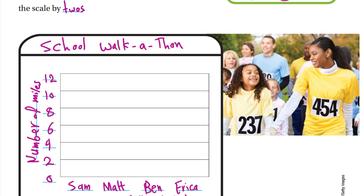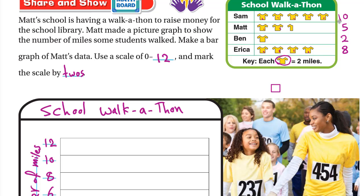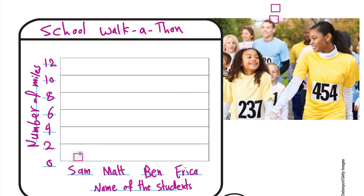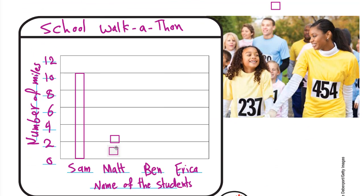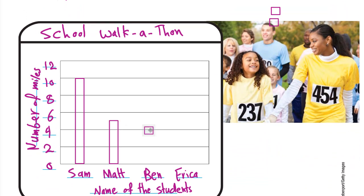Now we draw the bar graph. For Sam, the value is 10, so the bar goes up to 10. For Matt, the value is 5 — remember to use your pencil or ruler. Since 5 falls between 4 and 6, the bar should reach the middle between those two lines.